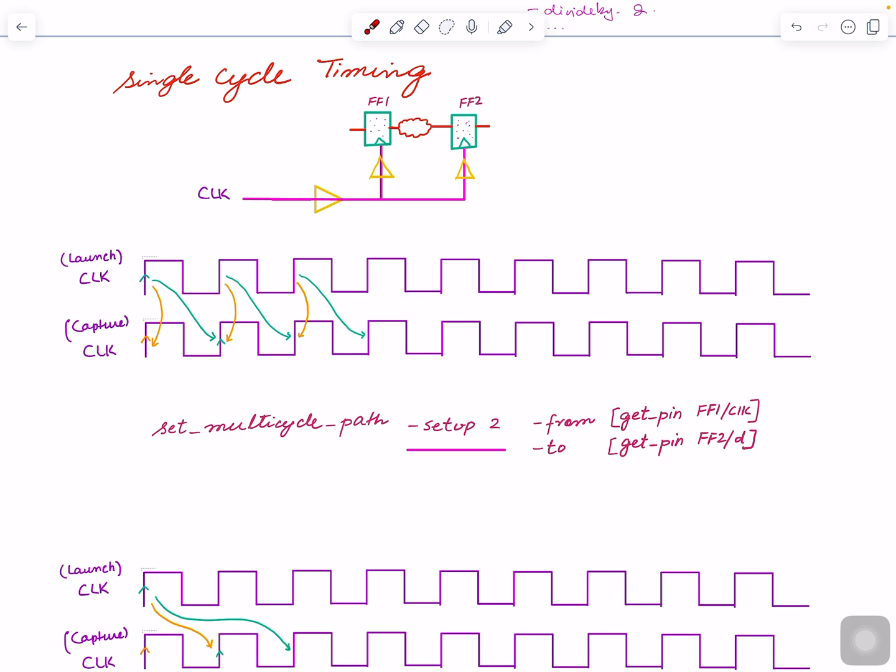Before that, let's look into this part. Focus here. You have a clock coming in, it has buffers or a clock tree built, not showing the entire segment of it. Then you have flip-flop one. There's a path from here that goes through some combinational circuits—AND, OR, whatever—I'm just representing that with the cloud, and then you have FF2.